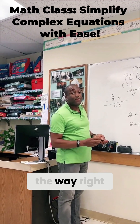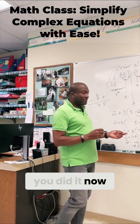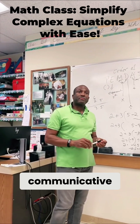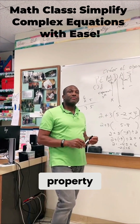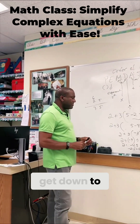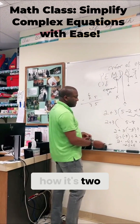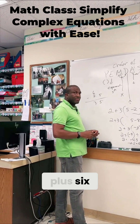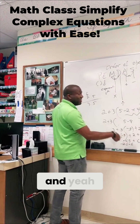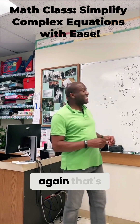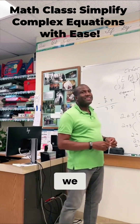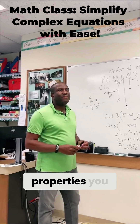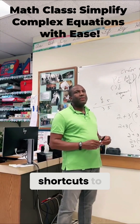That will be the final answer. Now, you know how we just went over the commutative property? Whenever I get down to two — see how it's 2 plus negative 4.5 plus 6 — I personally would do 2 plus 6 first. And yeah, that's why I go back to what we did before: it's important to know, because if you know those algebraic properties you can find shortcuts.